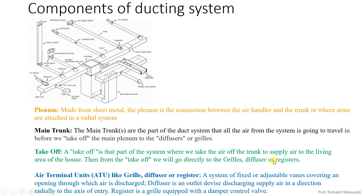Next we will see components of the ducting system. Here you can see we have the supply air plenum. On the trunk you can see small holes are there and an attachment is used — that is called a takeoff. From the takeoff we have multiple branches. What is the plenum? Plenum is made up of sheet metal and it is the connection between the air handler and the trunk.